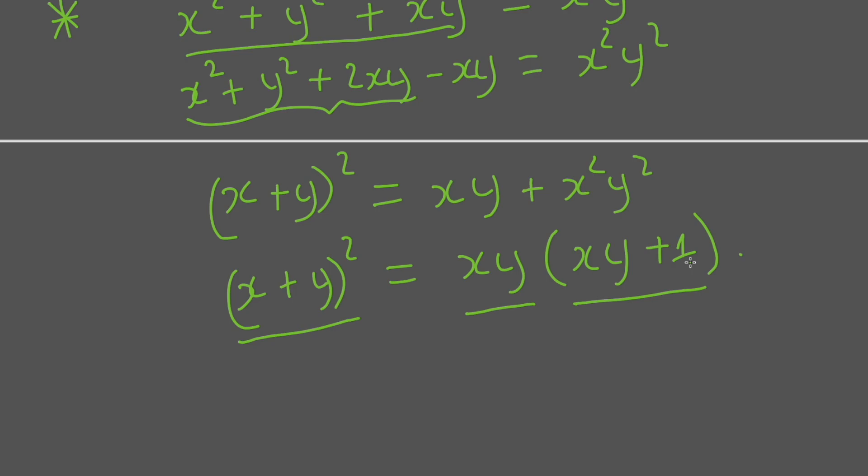And on the right side, this is the product of two consecutive integers xy and (xy + 1). So if it's the product of two consecutive integers, it cannot be a square number unless one of them equals zero.